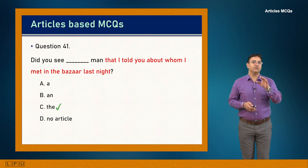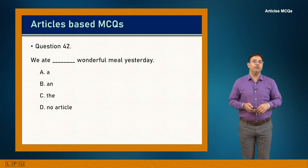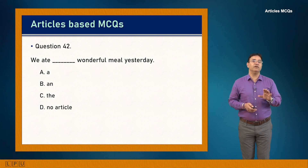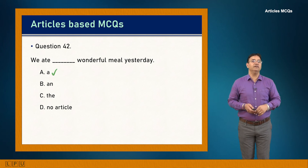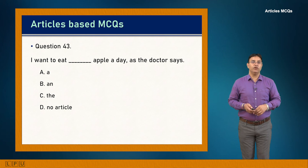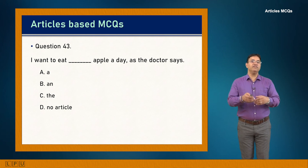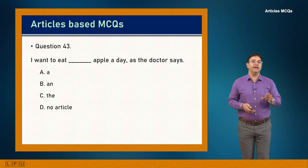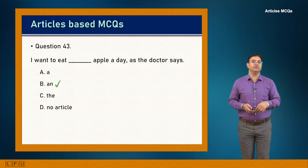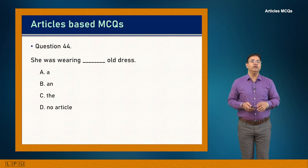Question 42: We ate dash wonderful meal yesterday. Answer is A: 'We ate a wonderful meal yesterday.' Question 43: I want to eat dash apple a day as the doctor says. 'Apple' starts with a vowel sound, so 'an' is used. Answer is B: 'An apple a day.'